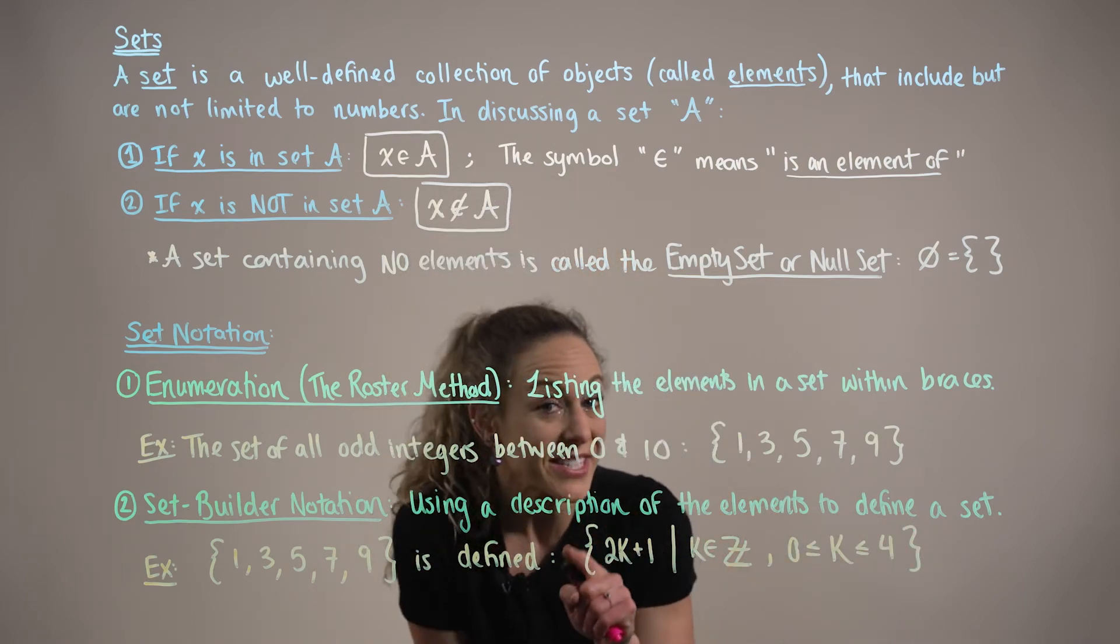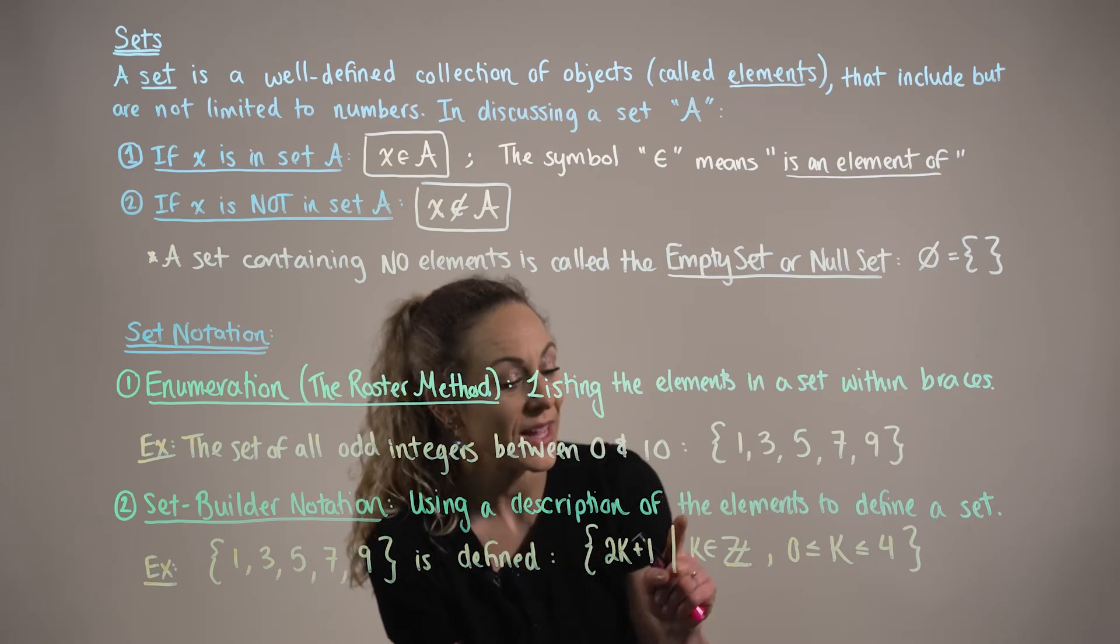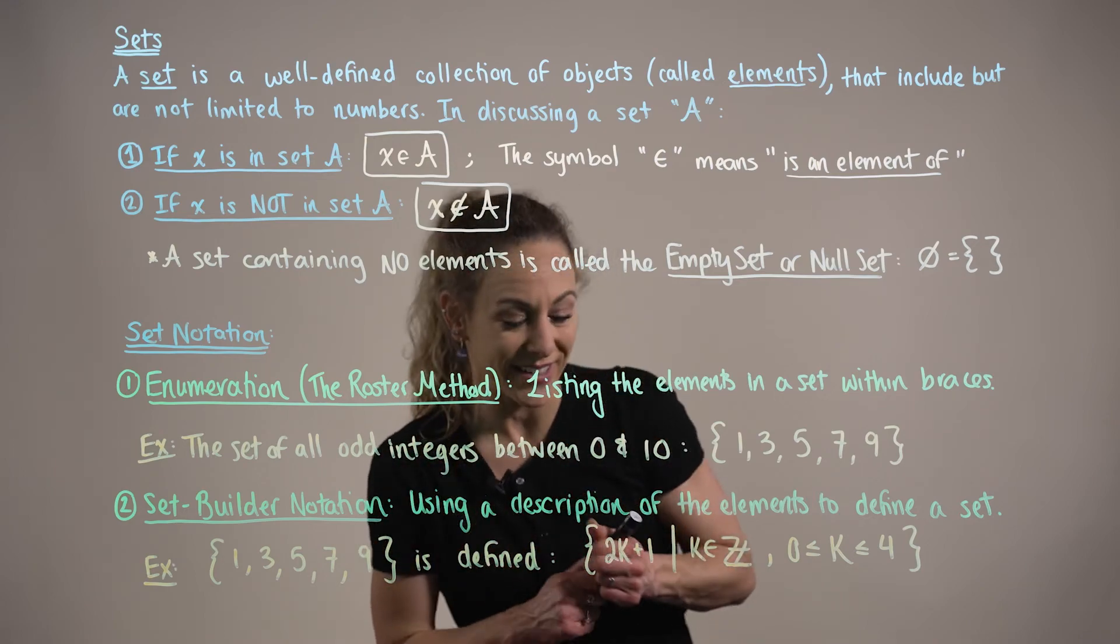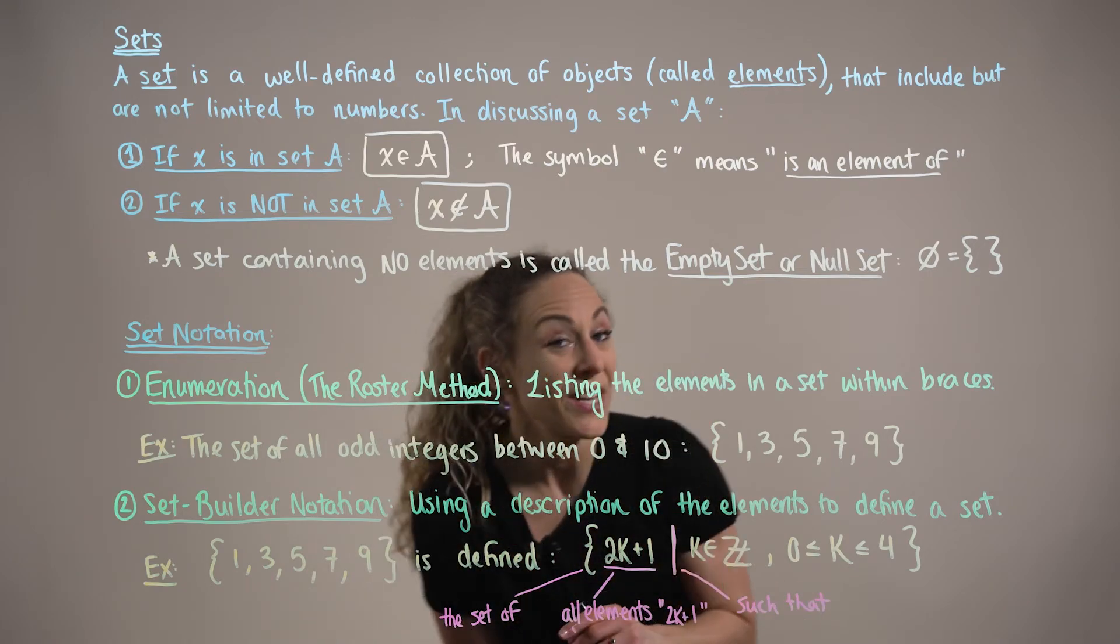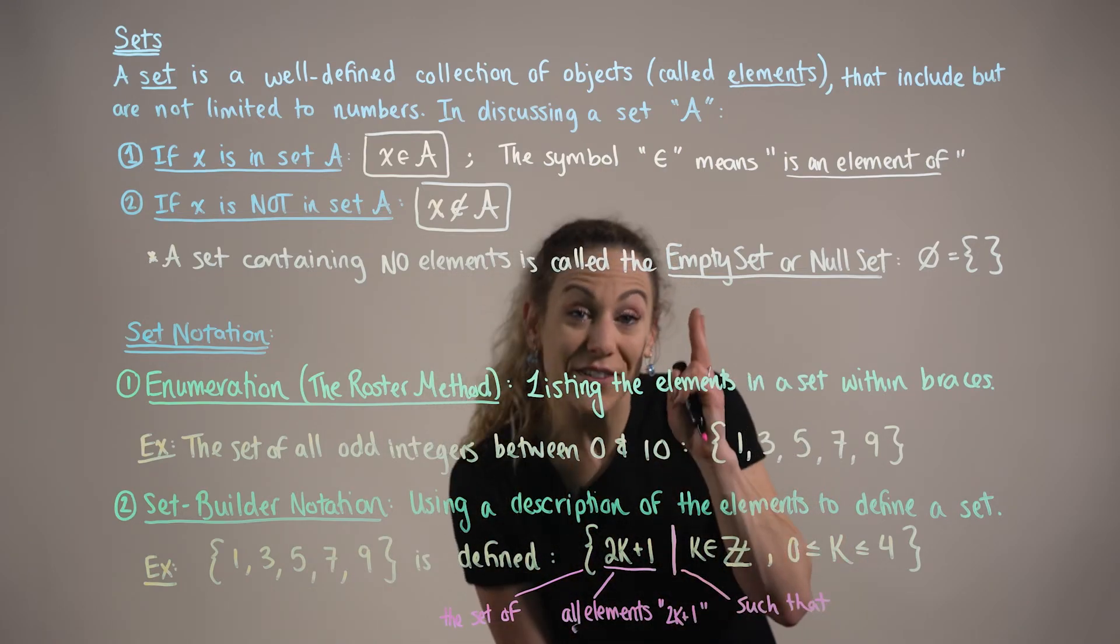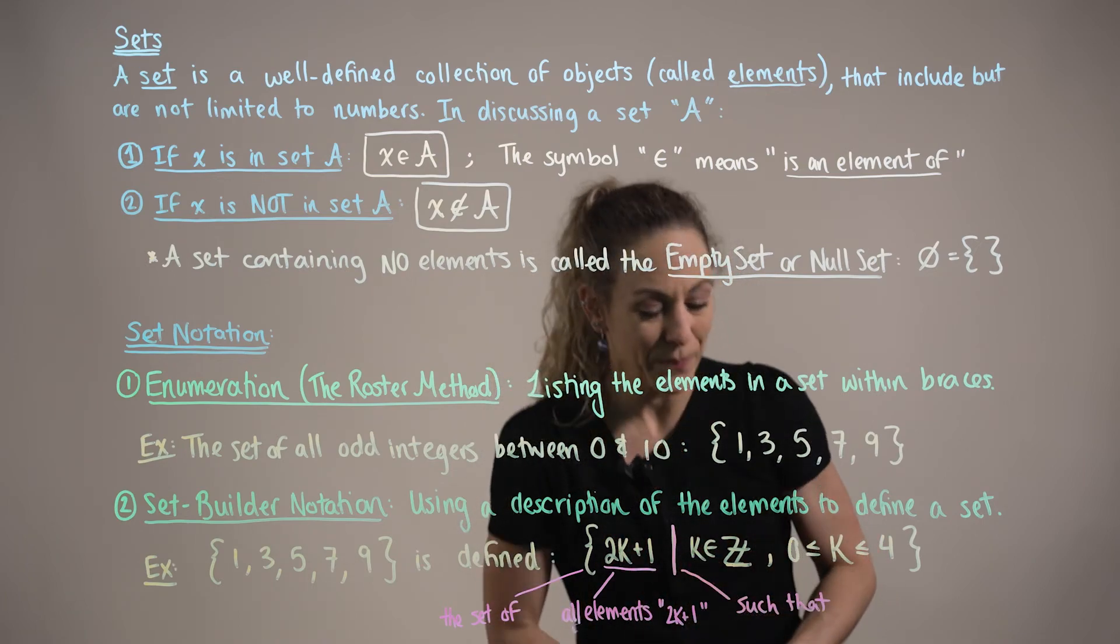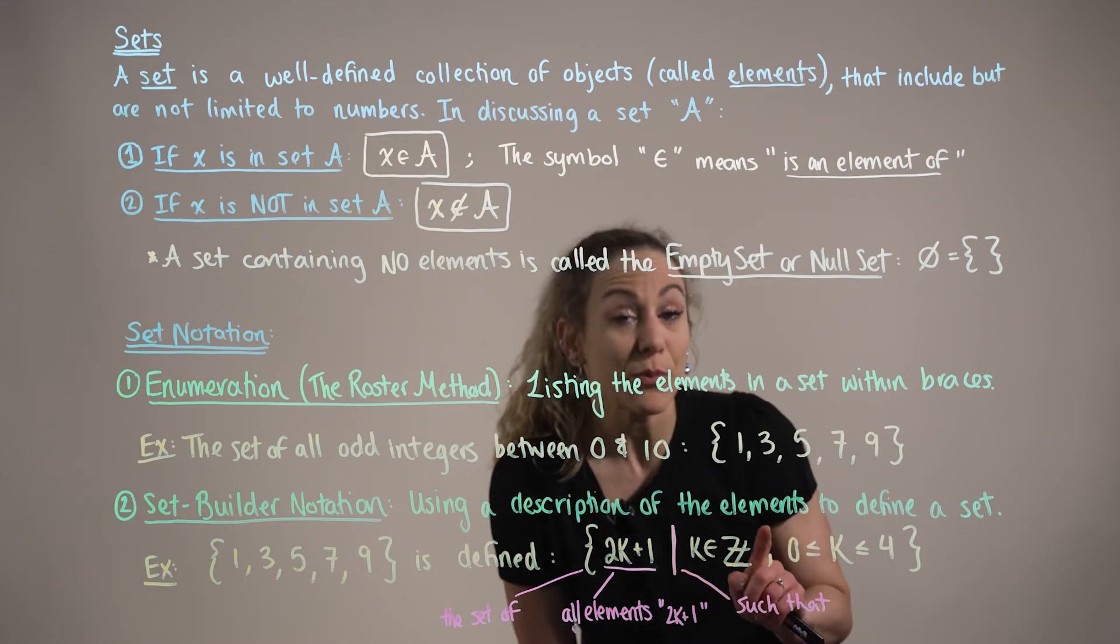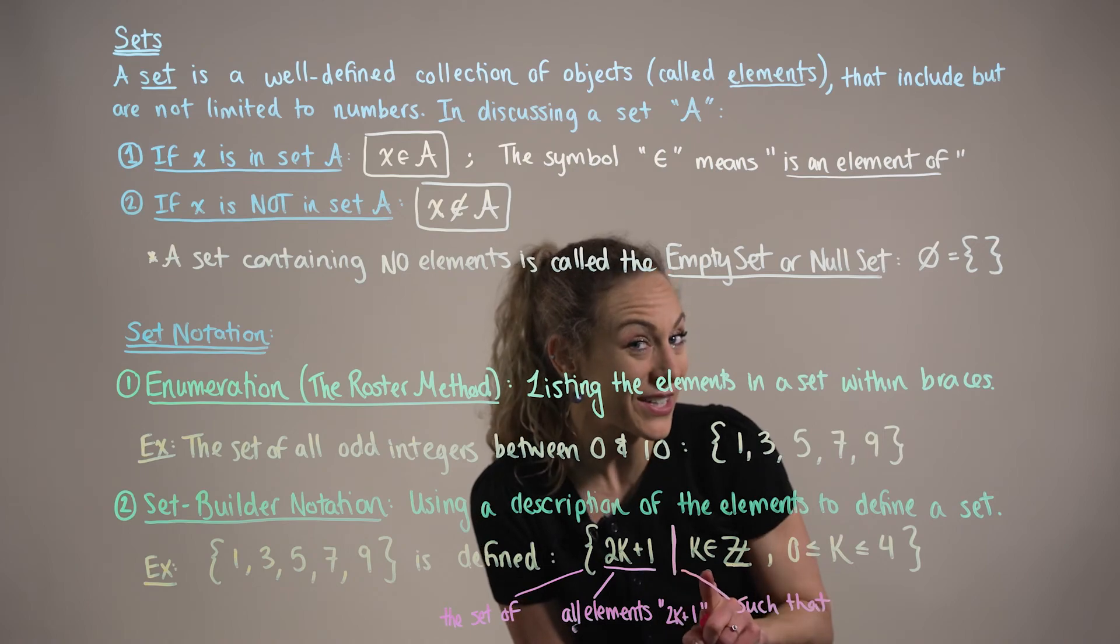Here we're defining the set of all elements 2k plus 1, and this straight line represents the word such that. Now on the right hand side of the such that bar, we have the description of our variable k. This says that k is an element of the integers, and we read a comma as the word and. So we have the set of all integers k, and the restriction that k is between 0 and 4.